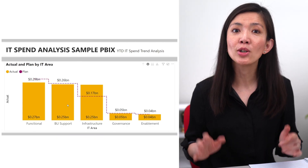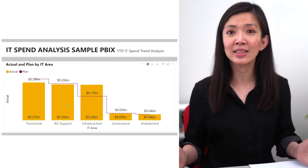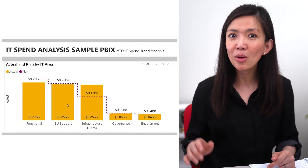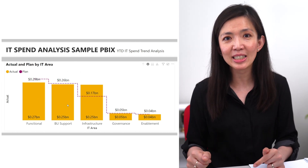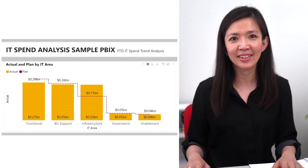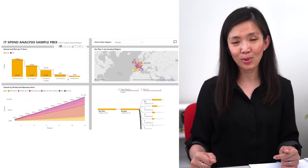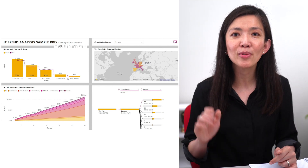Hi everyone, my name is Isabel and I'm an Excel and Power BI enthusiast with decades of business experience. In this video, I will show you how to create a line and bar chart in Power BI which looks really sleek, displaying a comparison between actual versus plan expenses in various IT areas. I came across these visuals while producing an IT Spend Analysis Sample Report, which is available to download from the Power BI Learning Portal. I will provide a link in the description below so that you can download the PBIX file for practice.